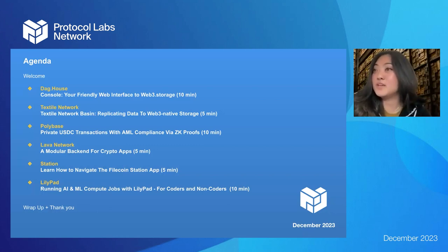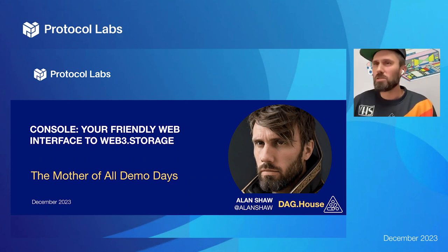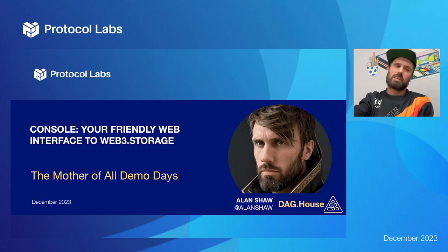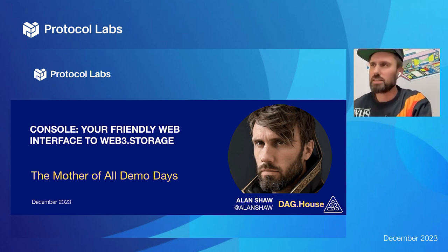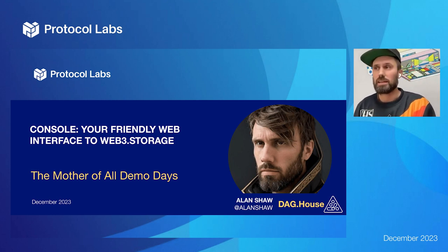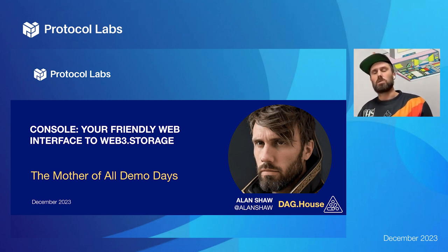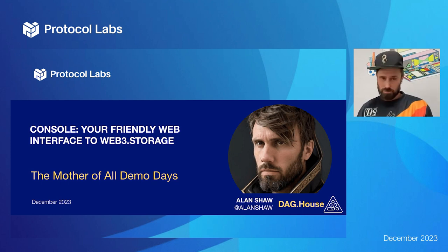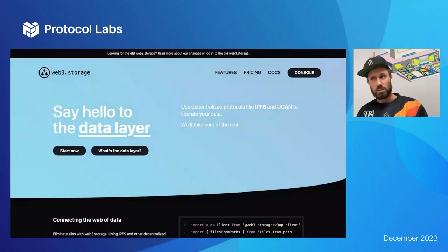First up we have Alan. In November we launched a new version of web3.storage — it's a big step forward for the product in terms of verifiability and it enables a big step back from centralized infrastructure. It uses public key cryptography, UCANs for decentralized authorization, and DIDs for decentralized identity.